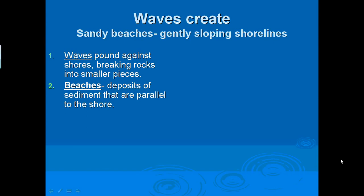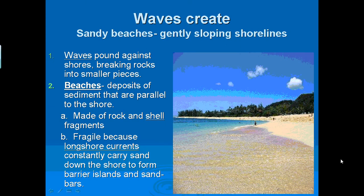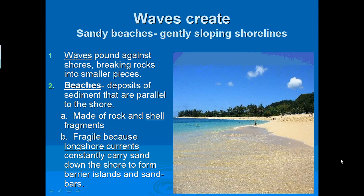Beaches are simply deposits of sediment that are parallel to the shore. Beaches are made of rock and shell fragments. They are fragile because longshore currents constantly carry sand down the shore to form barrier islands and sandbars. So our beaches are very fragile because the waves are constantly moving the sediment from the shoreline.